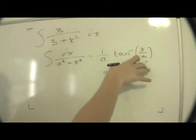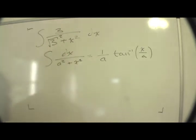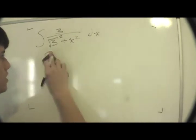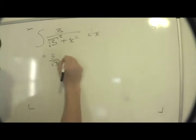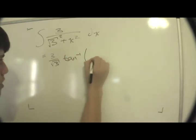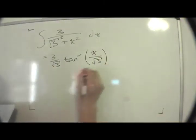So all we have to do is literally plug in values. Our a, I mean this thing is the same thing as square root of 3 squared. So our a is going to be square root of 3. So the solution to this is going to be 3 multiplied by 1 over square root of 3 times inverse tan of x divided by radical 3.